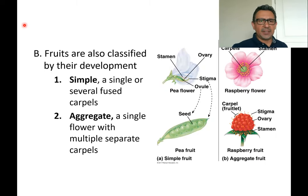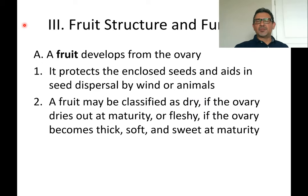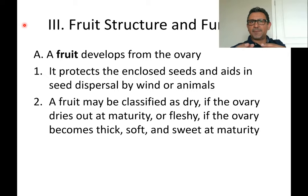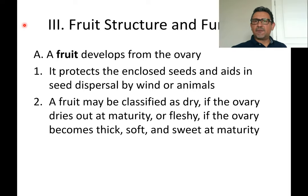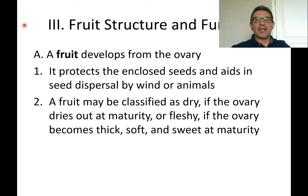Fruits can also be classified by their development. Examples of dry fruits include peanuts — the shell is the dried ovary covering — and sunflower seeds, where the shell is the ovary tissue and the seed is inside. That type of fruit is known as an achene. Fleshy fruits include apples, bananas, grapes, cherries, and tomatoes.